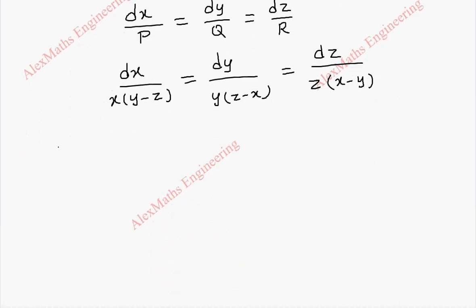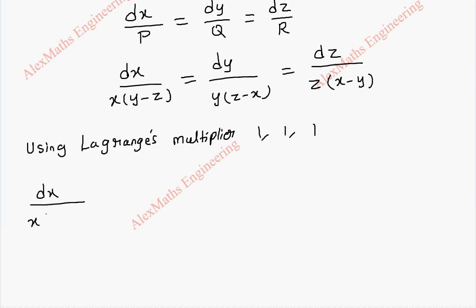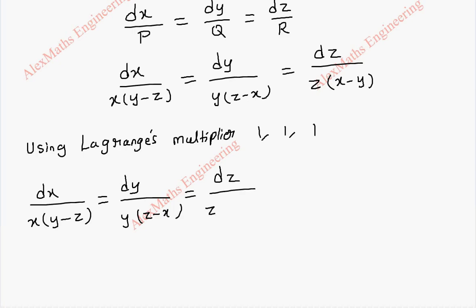Now using a proper Lagrange multiplier we have to proceed. For the first part, using Lagrange's multiplier, let's take 1, 1, and 1. We multiply 1 with both numerator and denominator in each case. Now using the ratio property we add all the numerators, which gives dx plus dy plus dz.